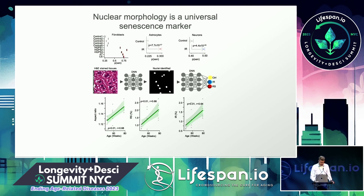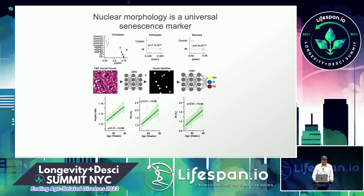We can apply this in fibroblasts from prematurely aged patients — they are predicted to be much older. We can do it in astrocytes that have been irradiated — they're predicted to be older. It also works in neurons. So these all use human cell lines, but we can also go into tissues.